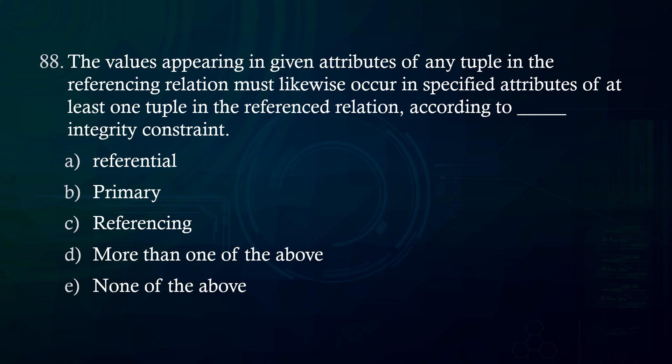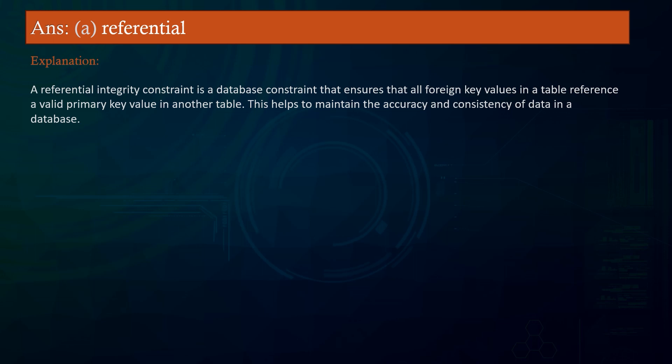The values appearing in given attributes of any tuple in the referencing relation must likewise occur in specified attributes of at least one tuple in the referenced relation, according to which integrity constraint? A. Referential. B. Primary. C. Referencing. D. More than one of the above. E. None of the above. Answer: Referential. A referential integrity constraint ensures that all foreign key values in a table reference a valid primary key value in another table, maintaining accuracy and consistency of data.